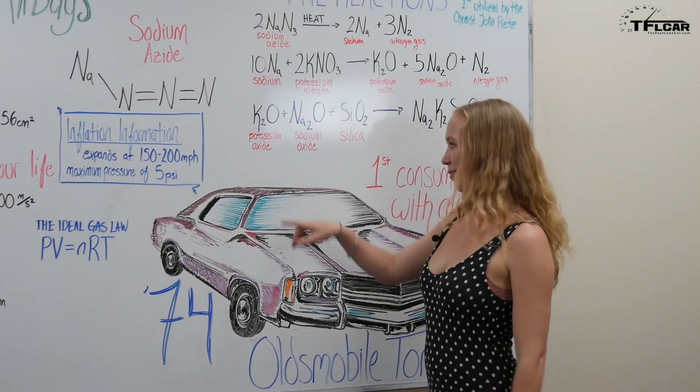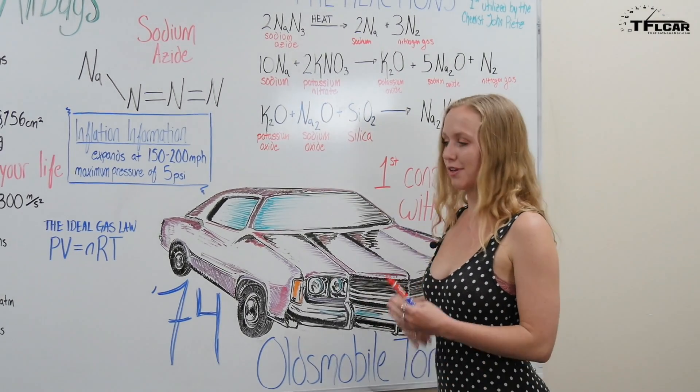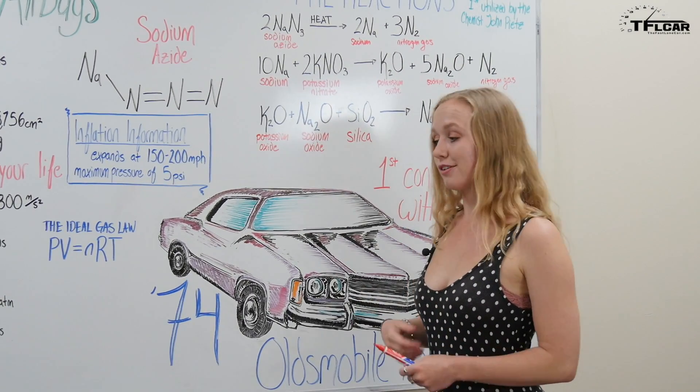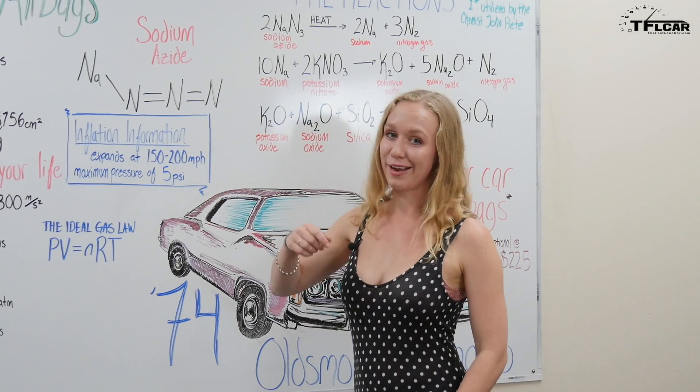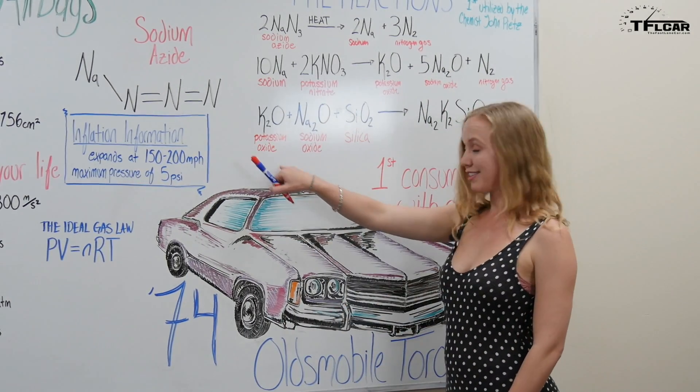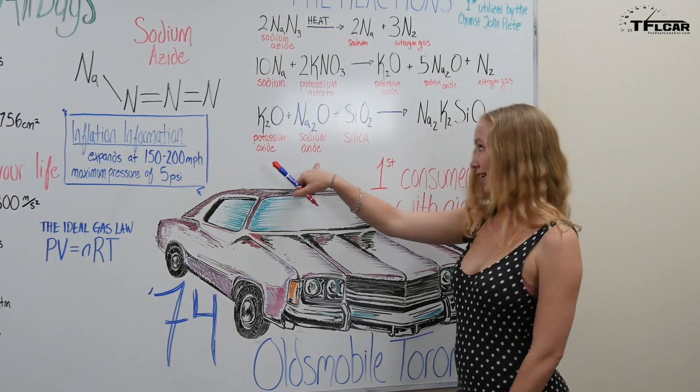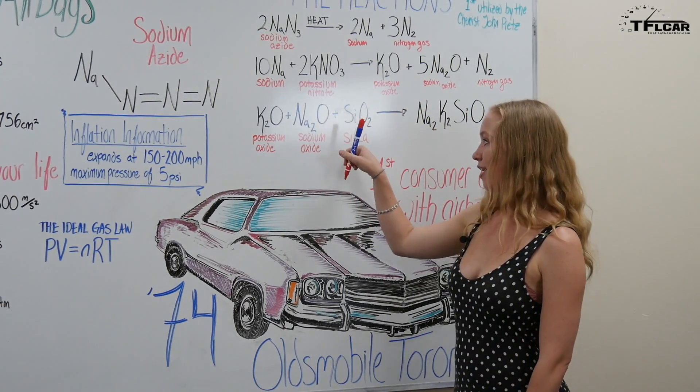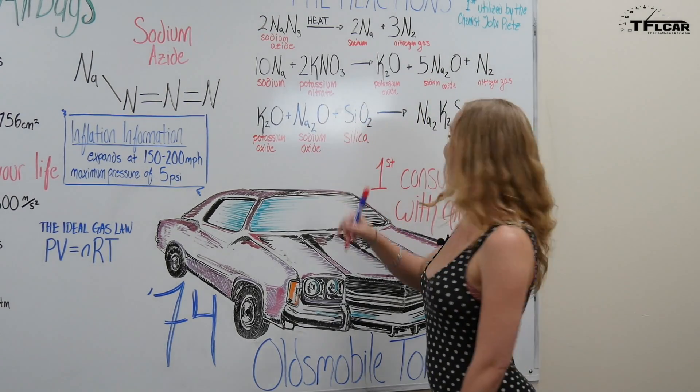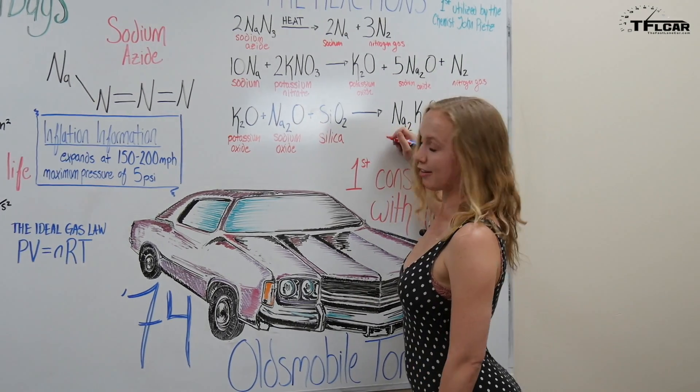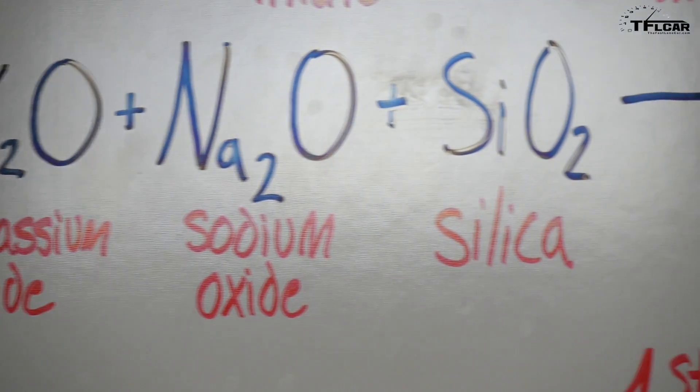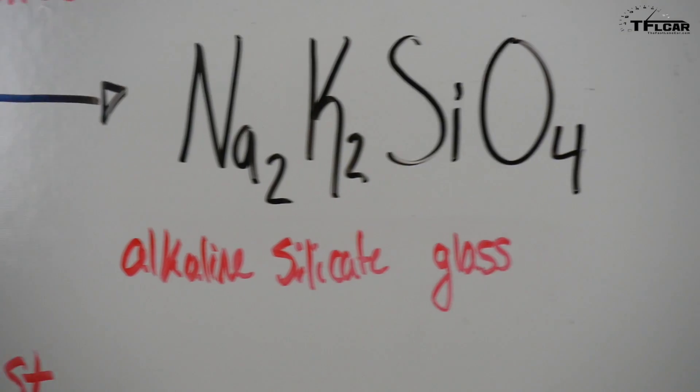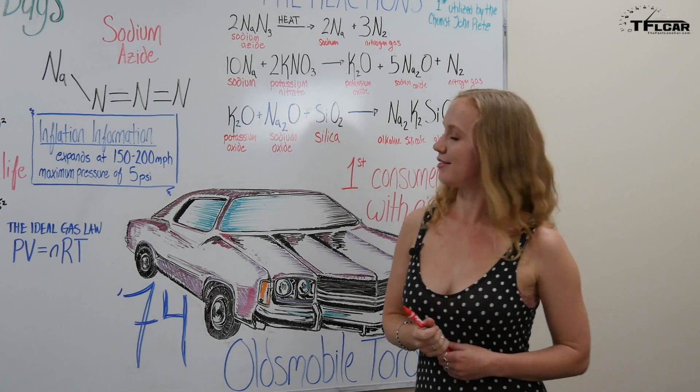So again you kind of want to make these little harmful fellows a bit more friendly to the person that's going to be flying forward in the airbag. So what you want to do is you want to take your potassium oxide mix it with your sodium oxide that was produced in this reaction and then also mix it with silica and then you're going to get something called alkaline silicate glass which is basically just a simple white powder and it's not gonna hurt you.